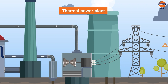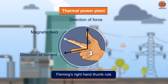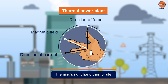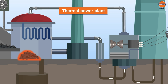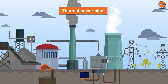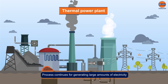Steam rotates the turbine, which in turn rotates the coupled generator. Here, electricity is generated using Fleming's right-hand thumb rule and is supplied to electrical power lines for transmission. After utilizing the kinetic energy of steam, it is redirected to the boiler through the condenser, and the process continues for generating large amounts of electricity.